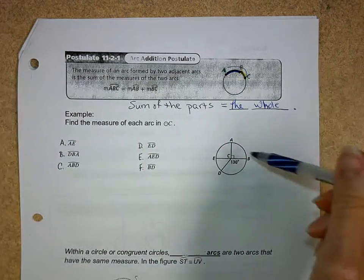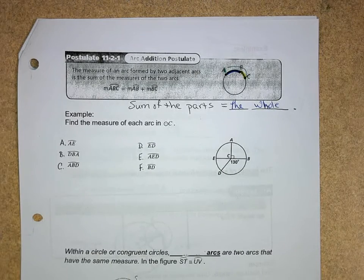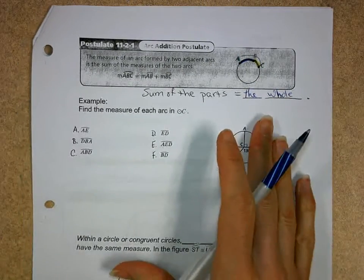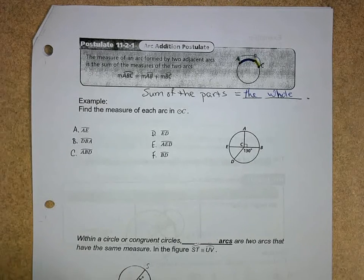And remember, if I added up all the arcs of a circle, they would add up to how many degrees? Very good, 360 degrees. So now let's actually practice the measures of these to see if we can work with it.